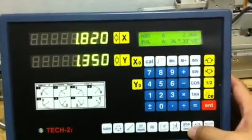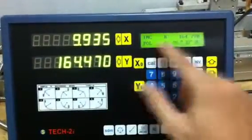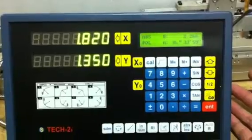To toggle between the two, press this button. Now you're in incremental, and again, it's in absolute mode.